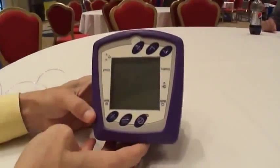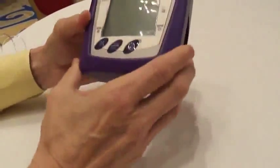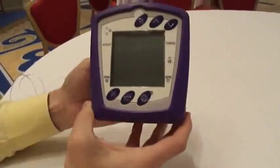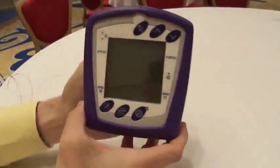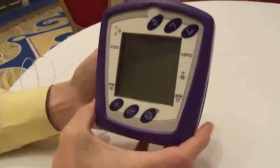Hey Chris, this is the Kapnacek 2 End-tidal CO2 monitor from BCI. Basically there's a couple things to the unit. The unit comes like this with a purple rubber boot on it. You also get with it a battery and a battery charger.